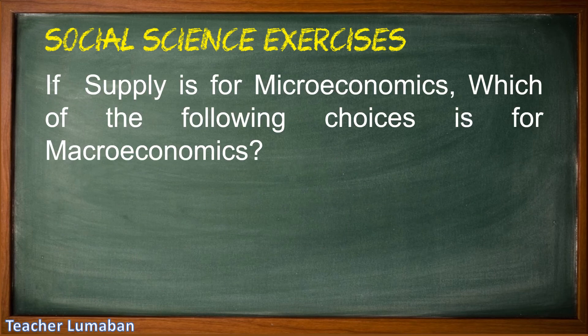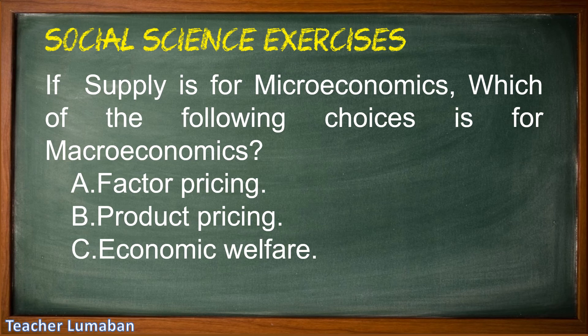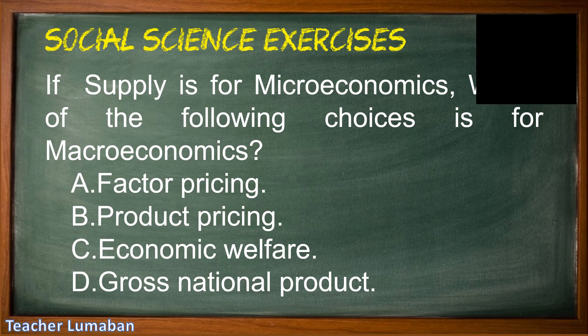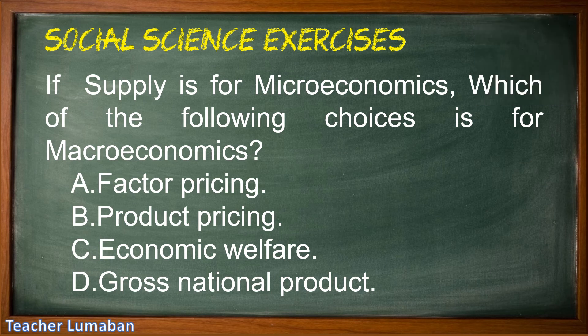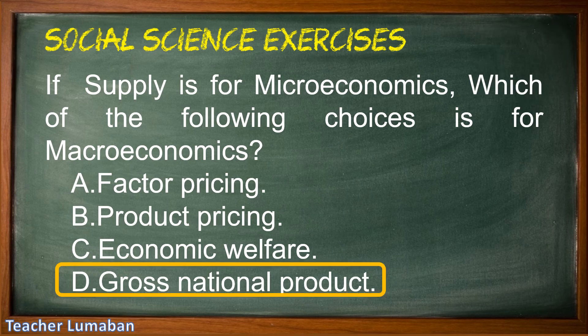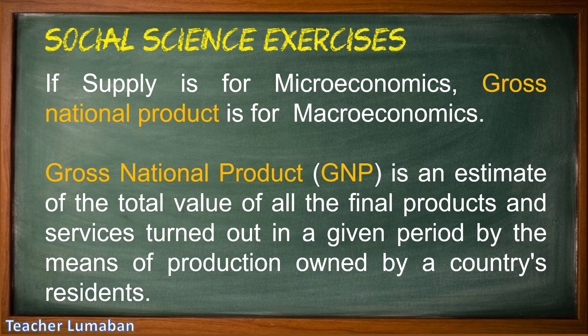If supply is for microeconomics, which of the following choices is for macroeconomics? Letter A factor pricing, Letter B product pricing, Letter C economic welfare, Letter D gross national product. The correct answer is Letter D, gross national product. Gross national product (GNP) is an estimate of the total value of all final products and services turned out in a given period by the means of production owned by a country's residents.